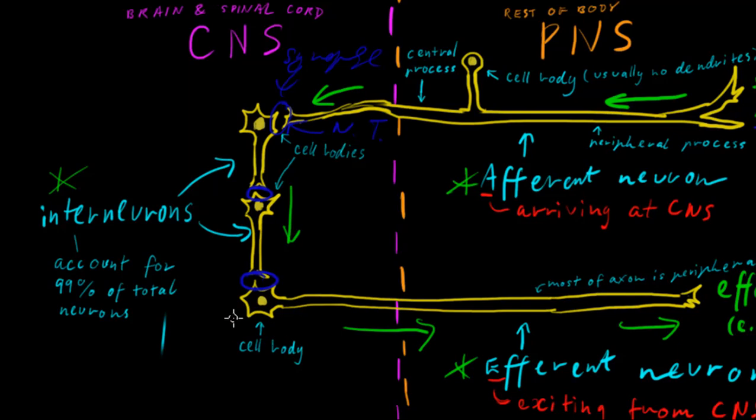The efferent neuron usually has its cell body within the central nervous system. I can think of one example, the enteric nervous system, which is in the gastrointestinal tract. Although if there are neurons, their cell bodies are obviously in the peripheral, they're outside of the central nervous system. So that's one example, but for the most part, their cell bodies are within the central nervous system, and their axon extends out to the peripheral nervous system, to their effector.